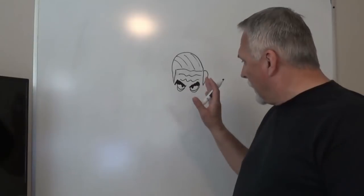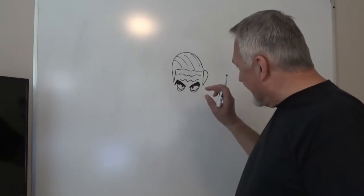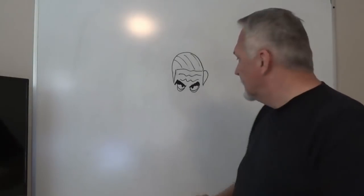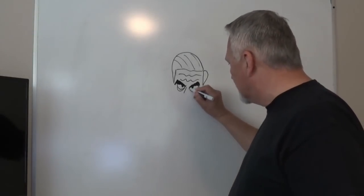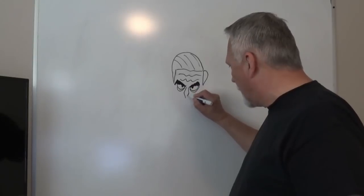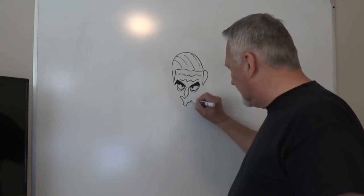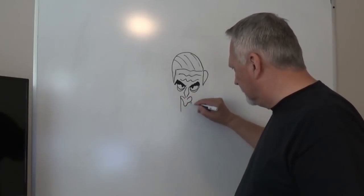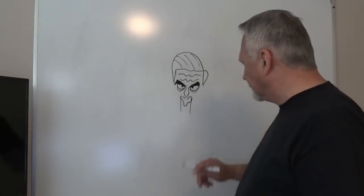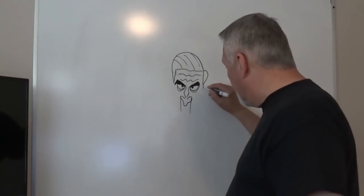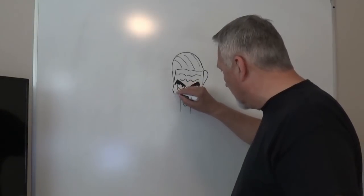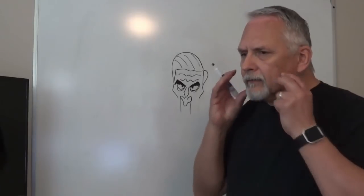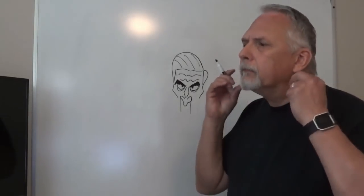Now he has two other prominent features I want to get in here: his nose and his jowly jaws. So let's start off with the nose — very prominent. There we go. He has a little bit of a higher cheekbone thing going on, and then I want to get those jaws that kind of look weird. They've got to protrude out.